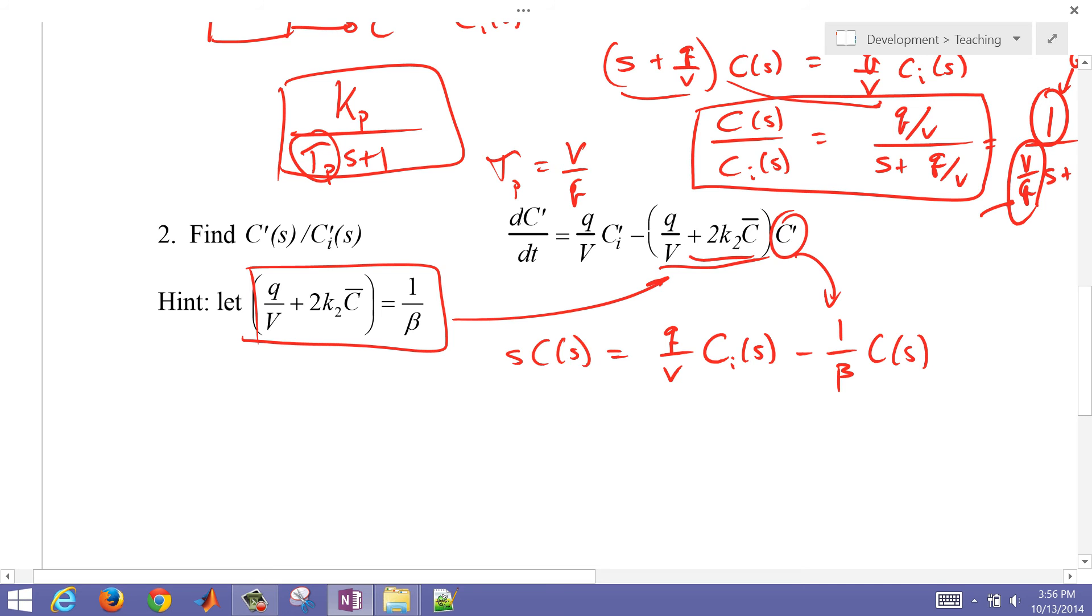So let me just go ahead and multiply this out. So I'm going to combine the terms. So I have S plus 1 over beta times C of S equals Q over V Ci of S.